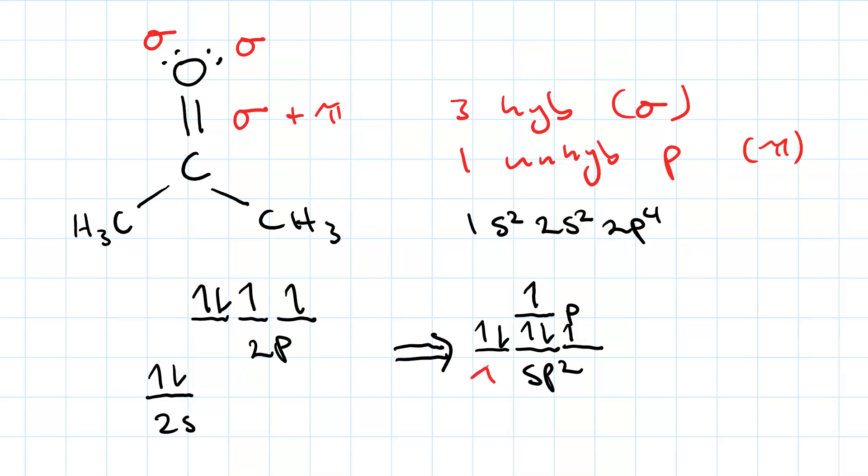Okay, so, these doubly occupied hybrid orbitals are our lone pairs. Amazing, right? This singly occupied hybrid orbital is our sigma bond. And the singly occupied p orbital gives us our pi bond.